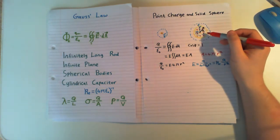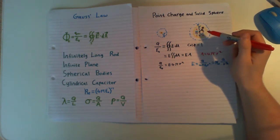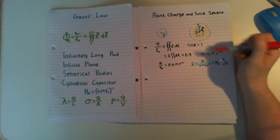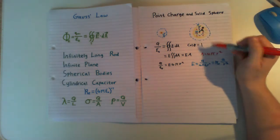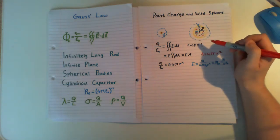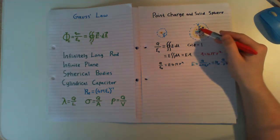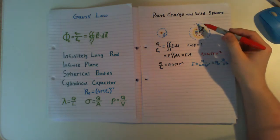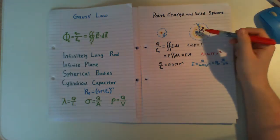For the first example, we're taking it to be a conducting sphere. You should know from your lectures in electricity and magnetism that inside a conducting sphere, due to the way everything gets arranged, we can't have an electric field. So up to the point where R equals A, we have no electric field. For all Gaussian surfaces we take until we get past A, E is equal to zero.